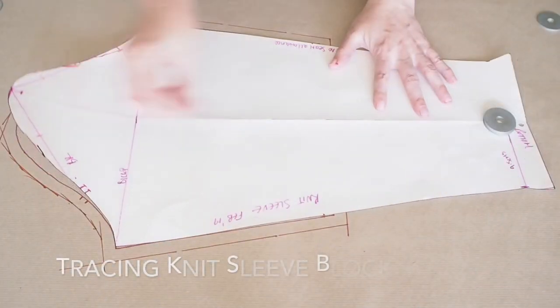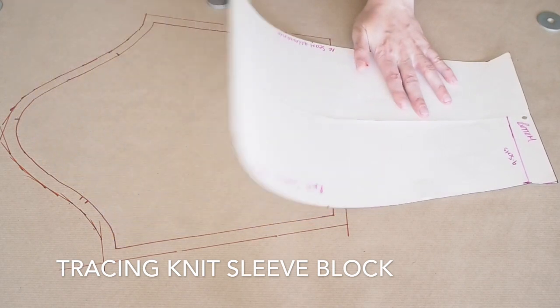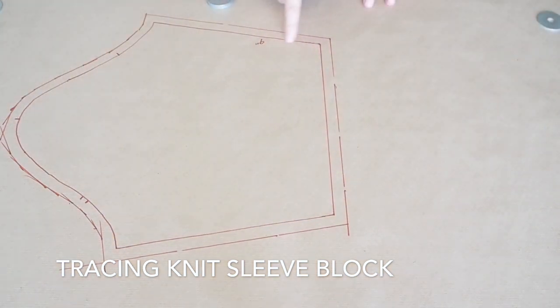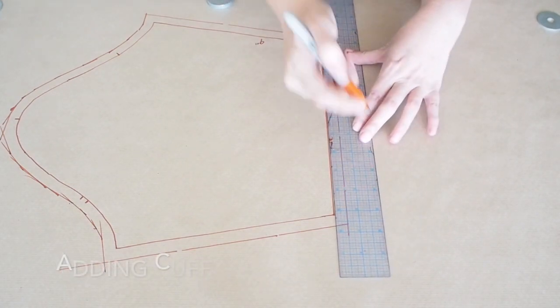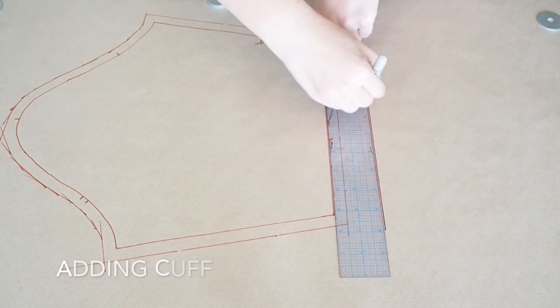And now for the sleeve on this pattern, I've just traced around my knit sleeve block. I've measured down from the armpit 9 inches to give me a nice elbow length sleeve. And just giving myself a 1cm seam allowance the whole way around.